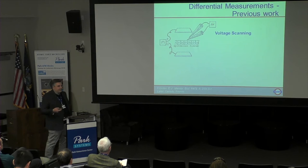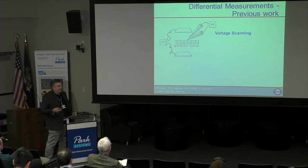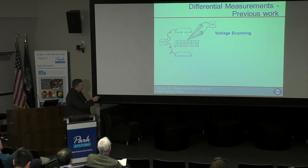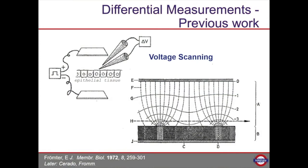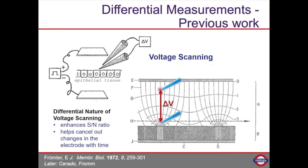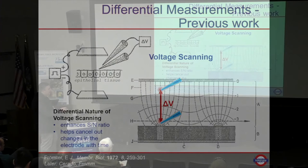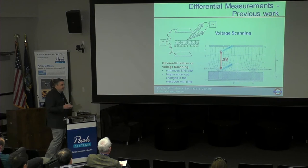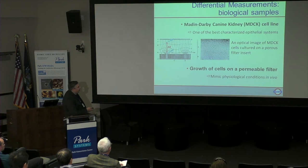This goes back to Hansmann's original paper in Science where he said SICM can image not only the topography but also the local ion currents emanating through pores in the surface. If you ever need a good idea, just read the old literature. Back in the 70s there was also this concept of voltage scanning - differential measurements. They applied a potential across epithelial tissue and measured the potential difference between two electrodes situated in space. Differential measurements are key to making this measurement: they increase your signal-to-noise ratio and cancel out electrode drift during the experiment. This is exactly what we have with SICM.